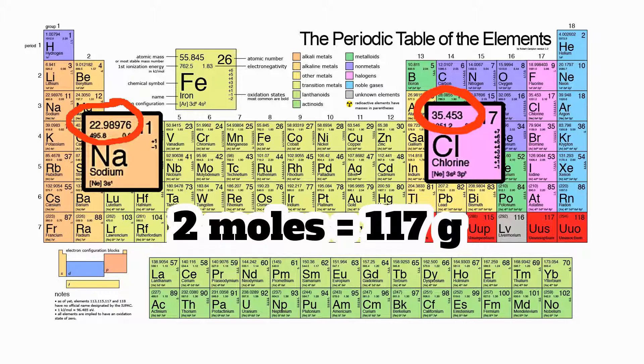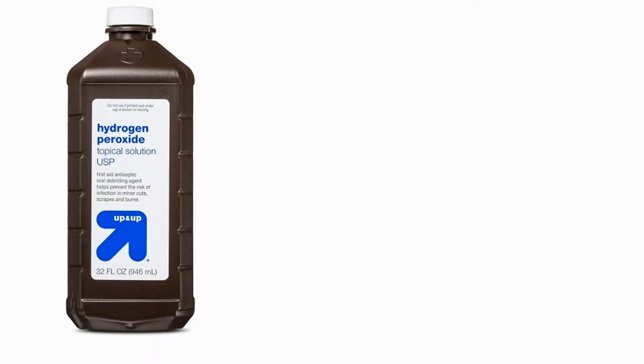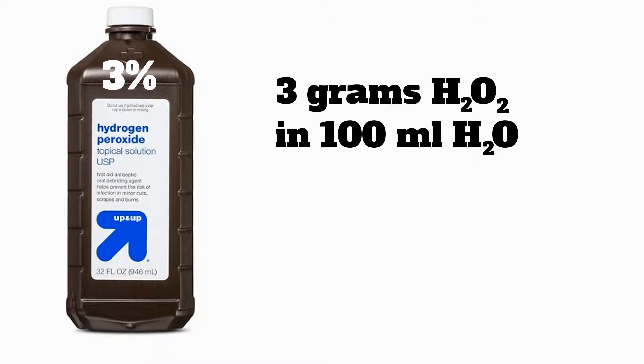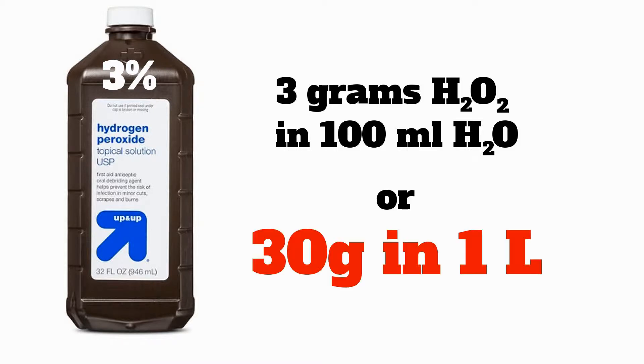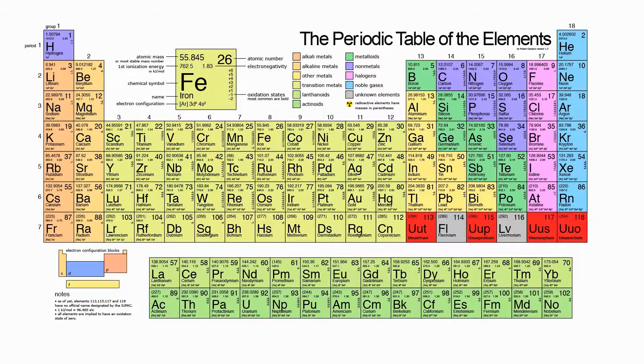Now I know you're thinking, "Hey dumbass, that hydrogen peroxide solution's already in water, what are we gonna do now?" Don't worry, I got a plan. Those bottles of hydrogen peroxide are three percent, which means there is three grams of hydrogen peroxide in 100 mils of water, or to put it another way, there are 30 grams of hydrogen peroxide in one liter or one bottle of that stuff.